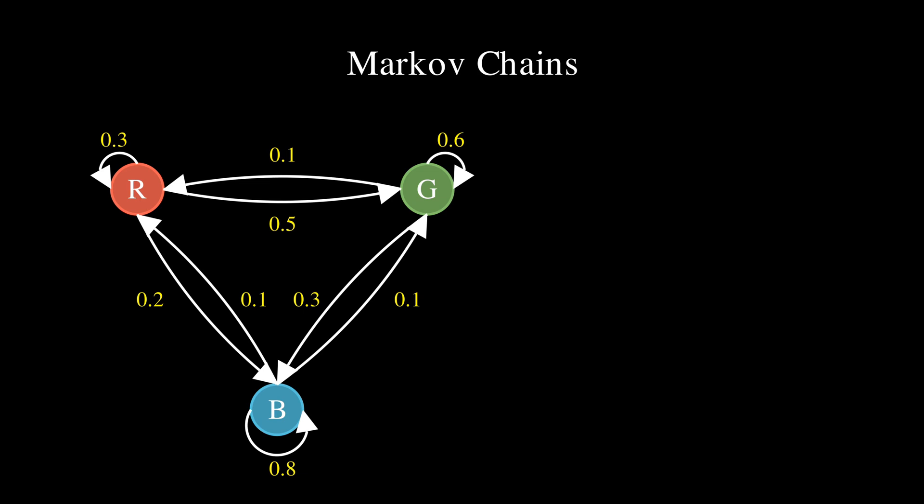For instance, if we are in the red state, there is a 30% chance we stay in red, a 50% chance we move to green, and a 20% chance we move to blue. Similarly, green has a 60% chance of staying in green, a 30% chance of moving to blue, and a 10% chance of moving to red. And finally, blue has an 80% chance of staying in blue, and a 10% chance of moving to either red or green.